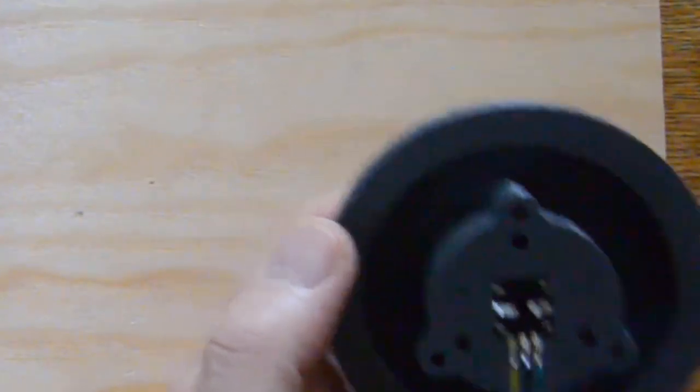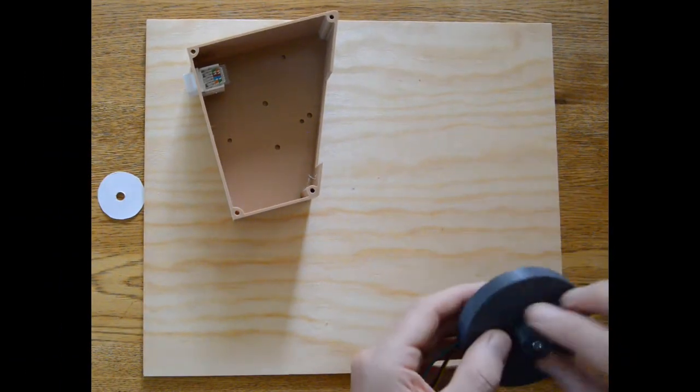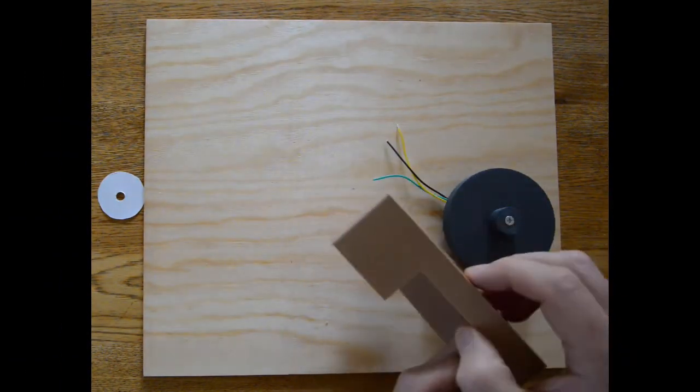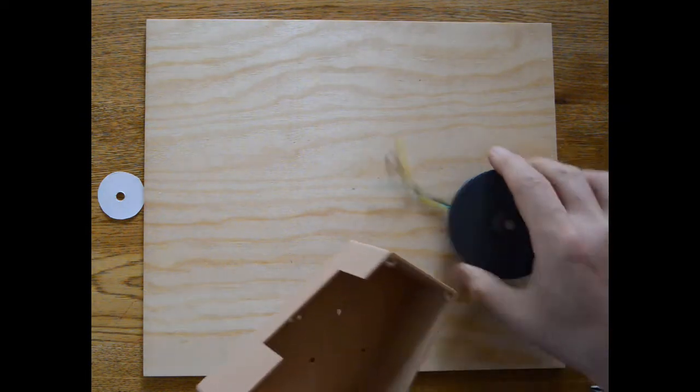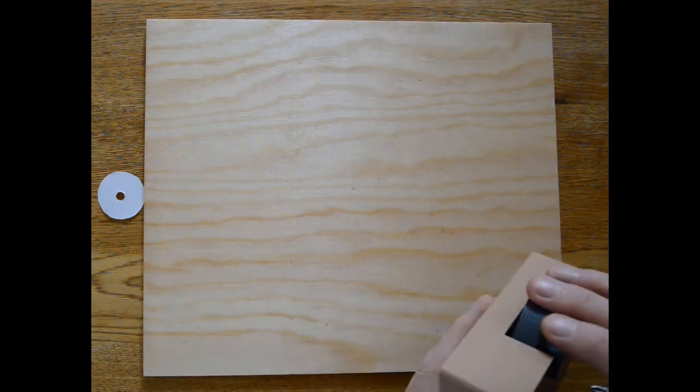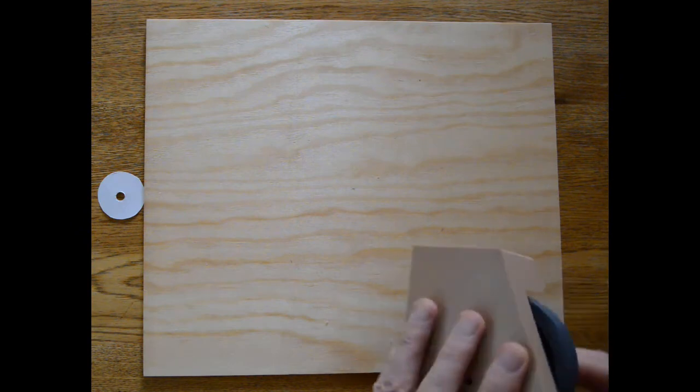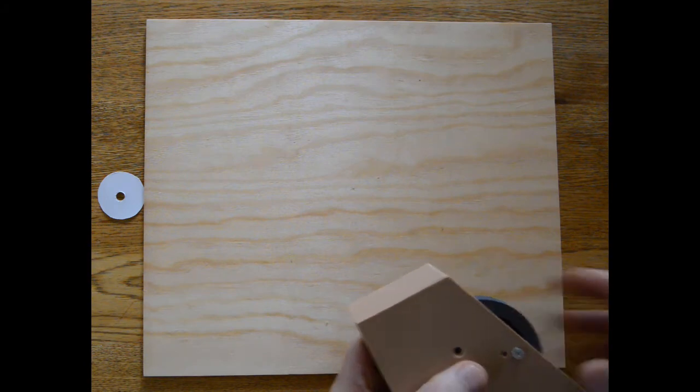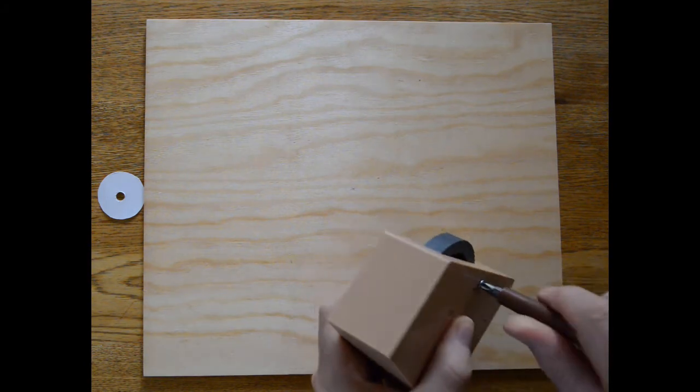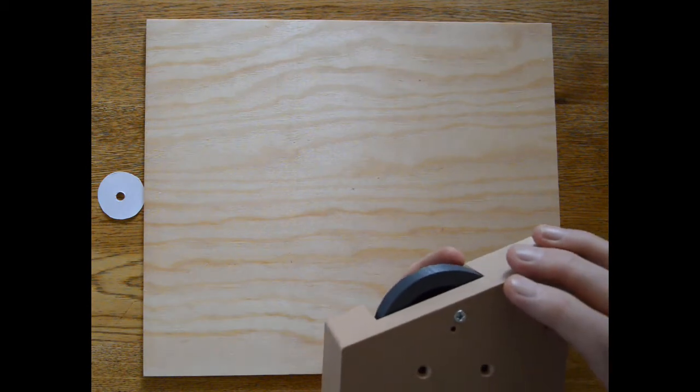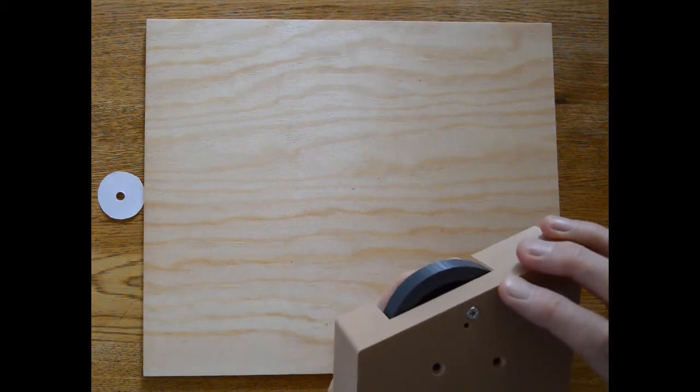Yellow, black, green is the standard sequence. So let's bolt this into the trim case. Wires at the bottom. Once you've got the first one in, the others are easy to find. There we go.